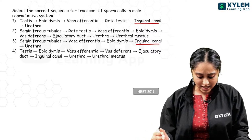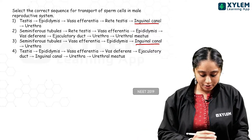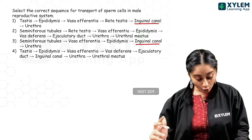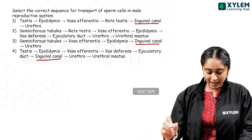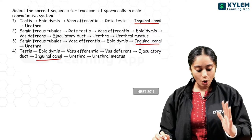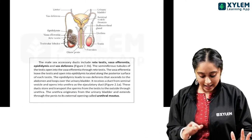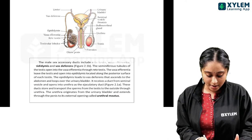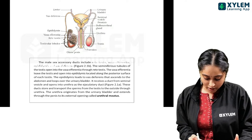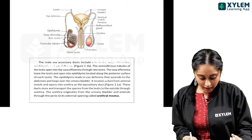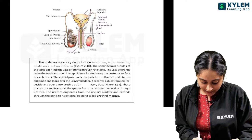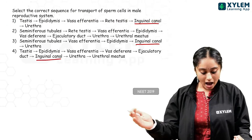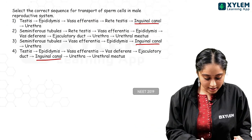The correct sequence is: seminiferous tubules → rete testes → vasa efferentia → epididymis → vas deferens → ejaculatory duct → urethra → urethral meatus. The fourth option includes inguinal canal, which is clearly wrong. Let us check the NCERT: rete testes, vasa efferentia, epididymis, vas deferens, moving into the bladder, forming ejaculatory duct, then urethra, then urethral meatus. This is the answer — option 2.